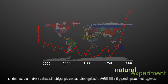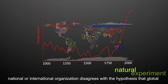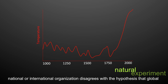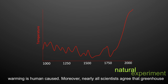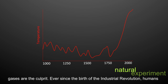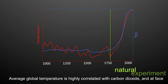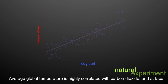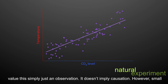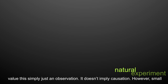With that said, presently no national or international scientific organization disagrees with the hypothesis that global warming is human-caused. Moreover, nearly all scientists agree that greenhouse gases are the culprit. Ever since the birth of the Industrial Revolution, humans have been releasing greenhouse gases into the atmosphere at increasing rates. Average global temperature is highly correlated with atmospheric carbon dioxide, but at face value this is simply just an observation that doesn't imply causation.